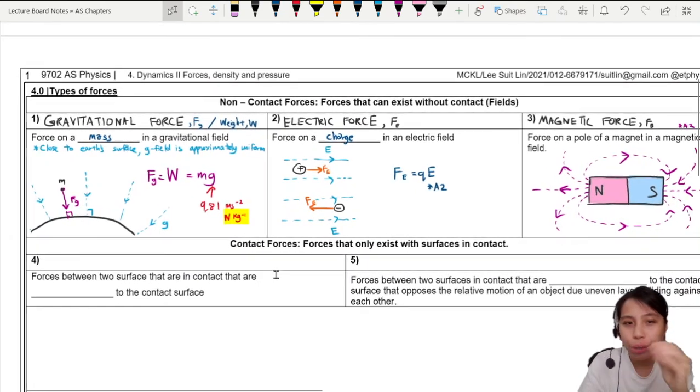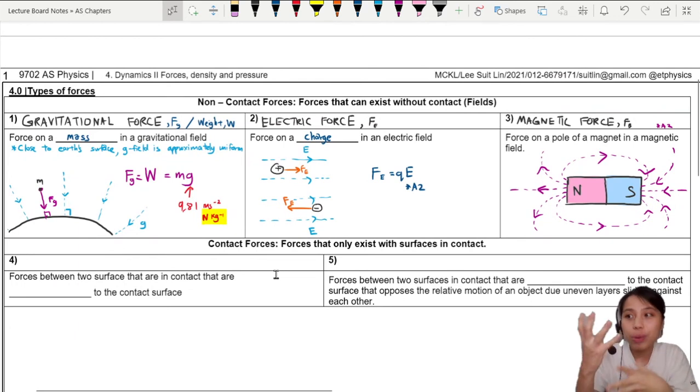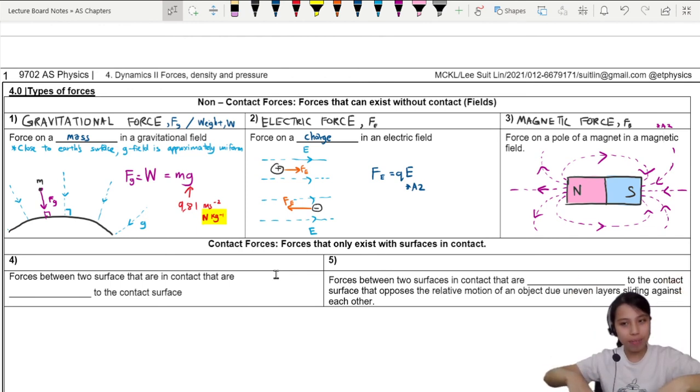Something is pulling us down to the center of the earth. So keep this in mind, three types of forces. We'll stick with gravitational force but we'll learn more about every single one of them in A2.